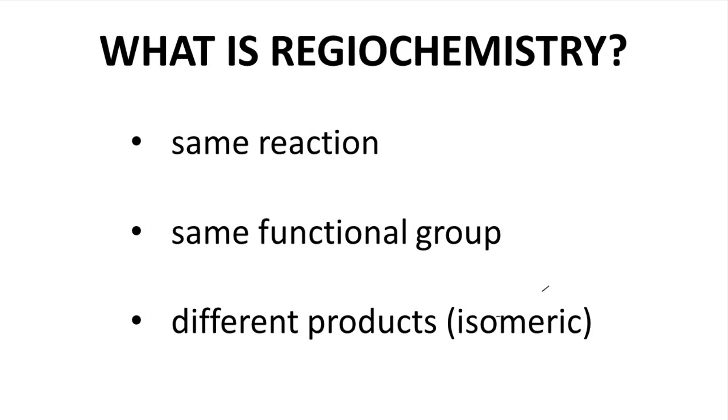Just to be clear, let's start by defining regiochemistry. So regiochemistry arises when the same reaction can occur on a functional group in different ways. The products from the multiple pathways are isomers. Specifically, they are regioisomers.